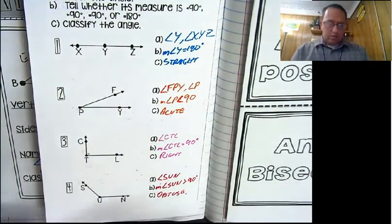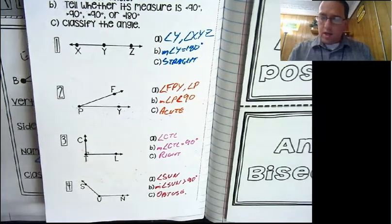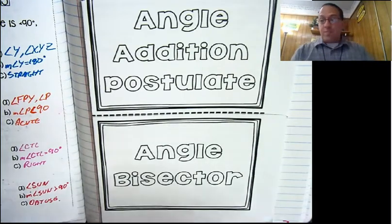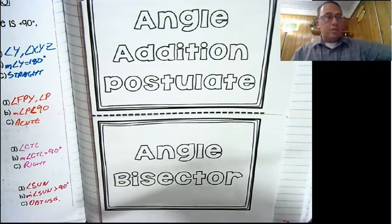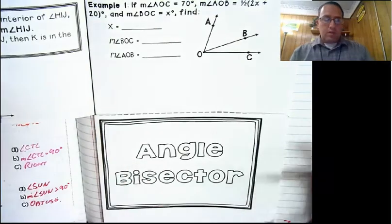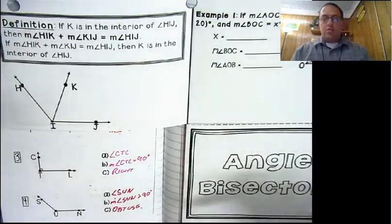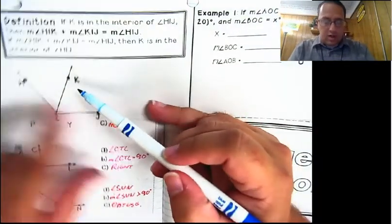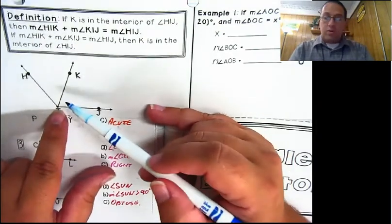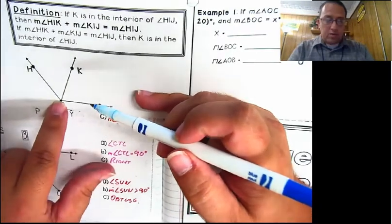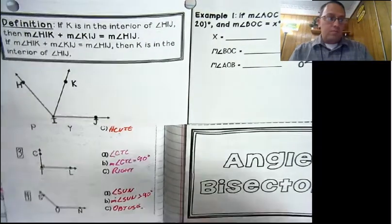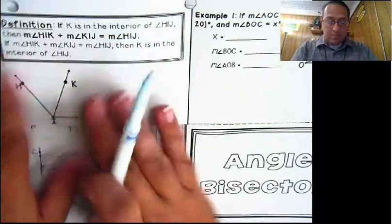That's the basics of angles. There are two more things to talk about: the angle addition postulate and the angle bisector. The angle addition postulate is basically the same as the segment addition postulate, except with angles. If K is in the interior of angle HIJ, then the measure of angle HIK plus the measure of angle KIJ equals the measure of angle HIJ. These two adjacent angles have the same vertex, so the whole big angle equals the sum of the two smaller ones.